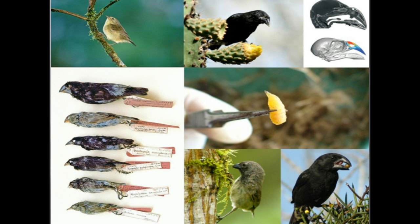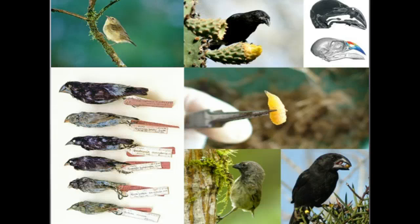An organism's life history comprises the traits that affect its schedule of reproduction and survival. Key factors include: the age at which reproduction begins, how often the organism reproduces, and how many offspring are produced during each reproductive cycle. Life history traits are evolutionary outcomes reflected in the development, physiology, and behavior of an organism. Write that down.